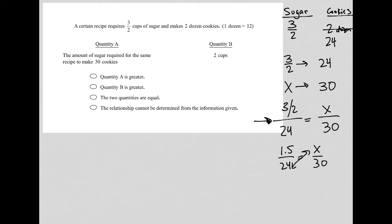I can cross multiply this and get 24X equals 1.5 times 30, which is 45. Then divide by 24.